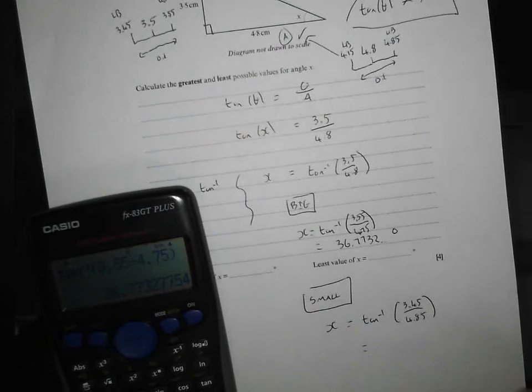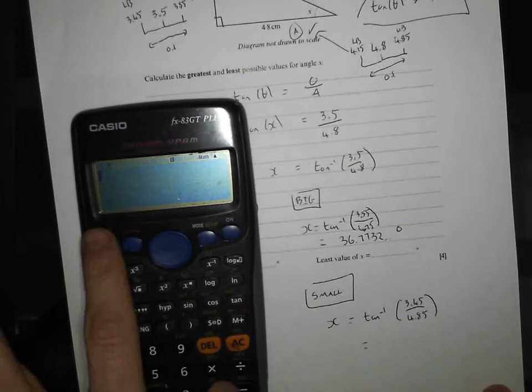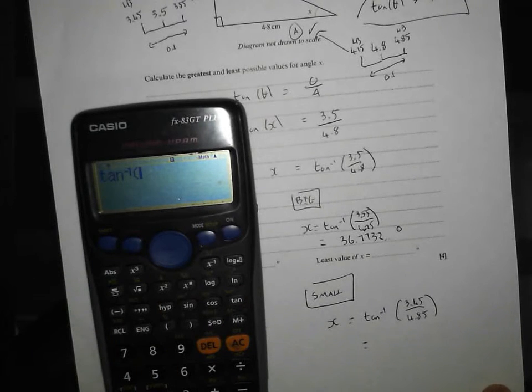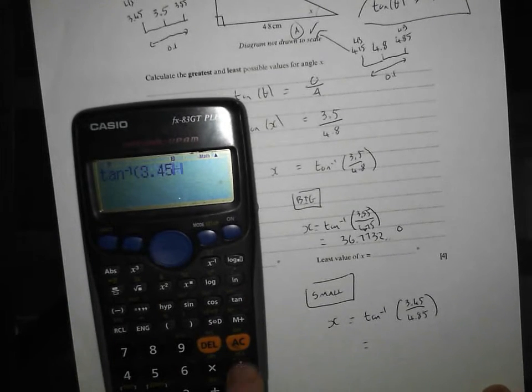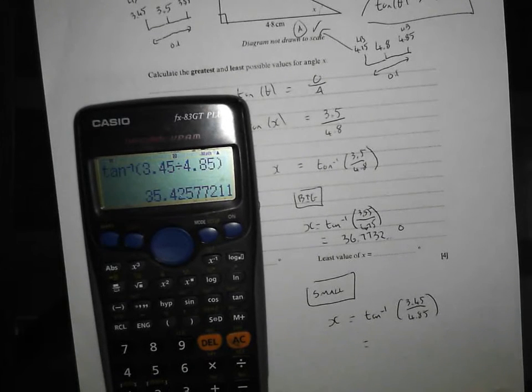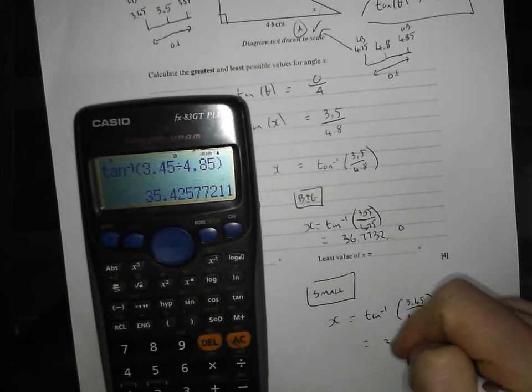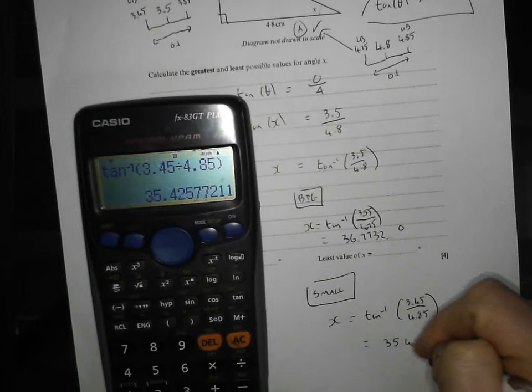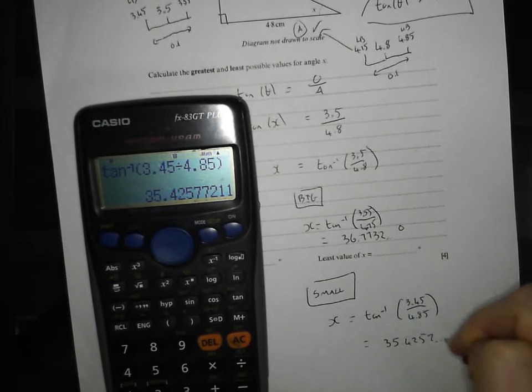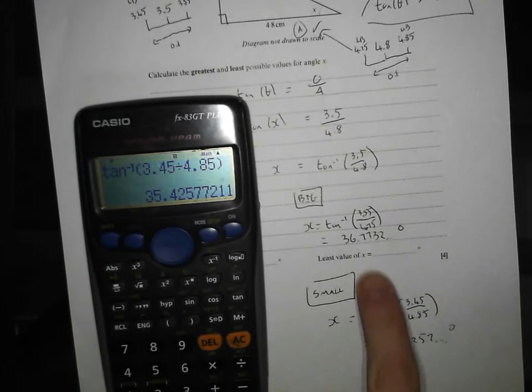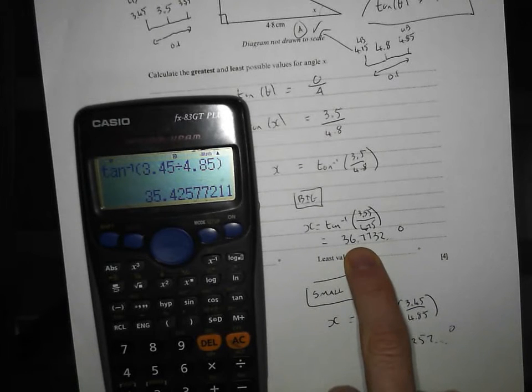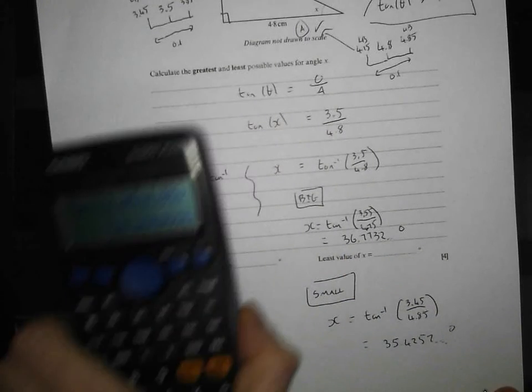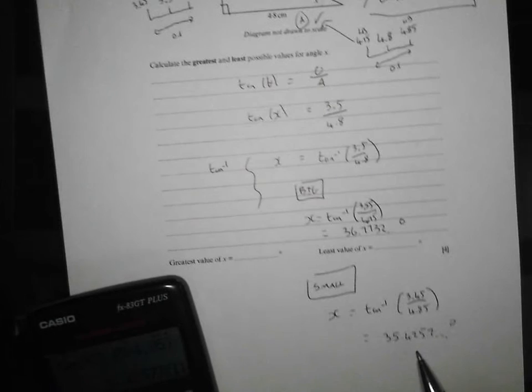Let's try that in the calculator. Shift tan of 3.45 divided by 4.85. Close my little brackets off, press equals, and that's going to give an answer of 35.4257. So that is as big as it could possibly be, 36.7732, and that is as small as it possibly can be.